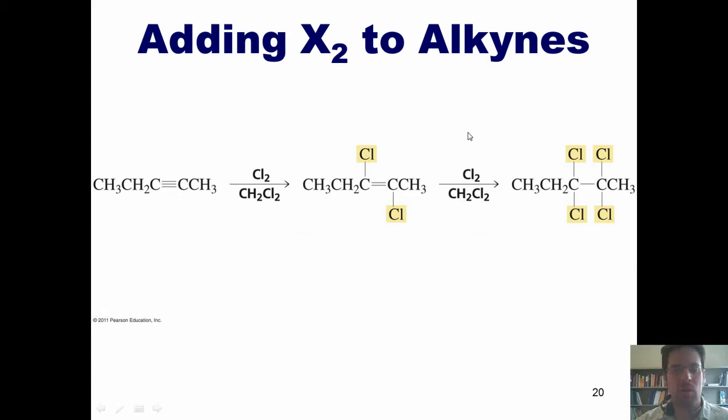A second molecule of halogen, Cl2, then does the same thing once again, leaving me this type of molecule. Four chlorines is a tetrachloride.